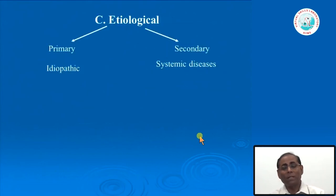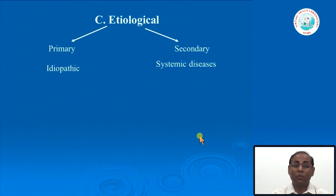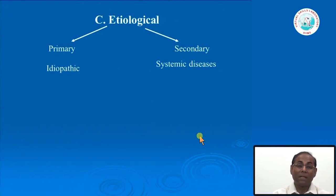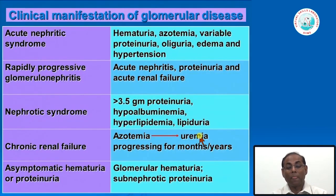Etiologically, those secondary to systemic disease should be identified so that the systemic disease can be treated, whereas primary diseases require a different kind of management.